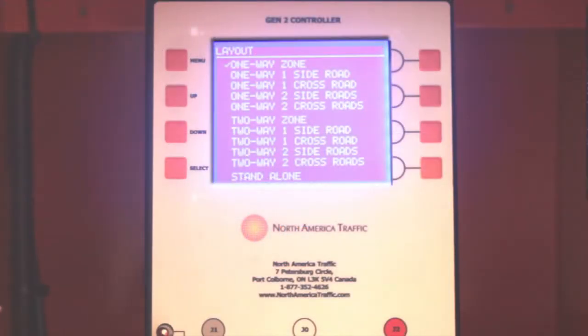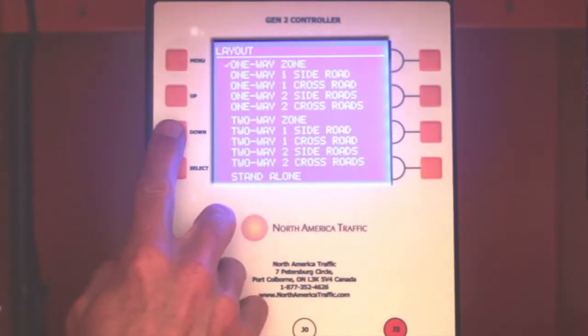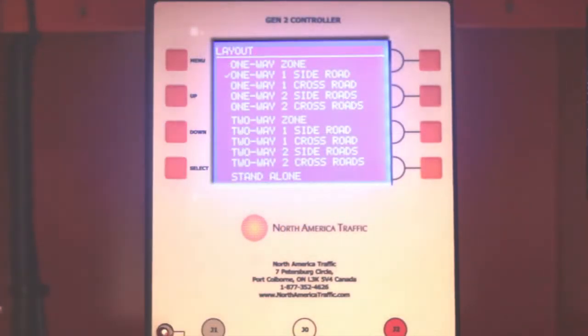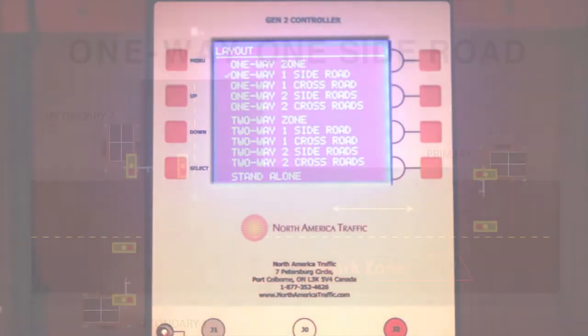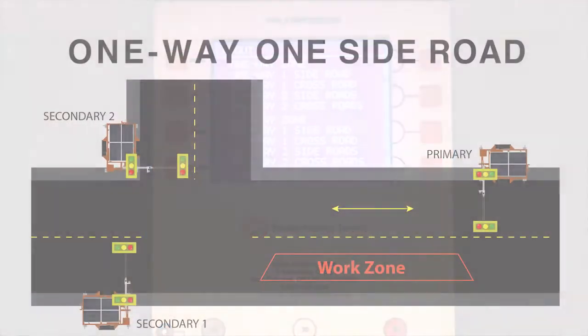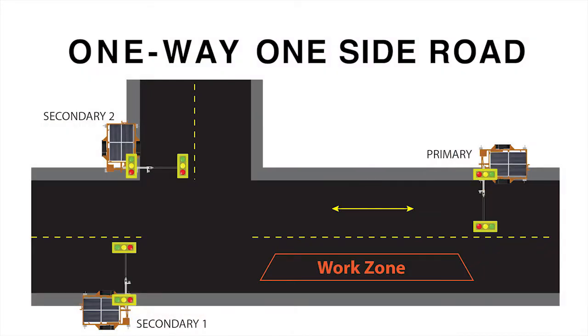One Way One Side Road requires a primary, a secondary one on the main road, and a secondary two which will be the side road.